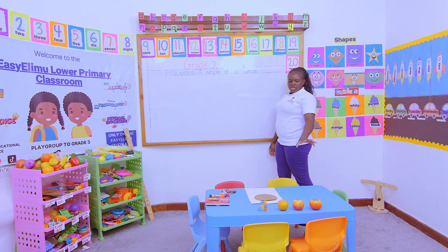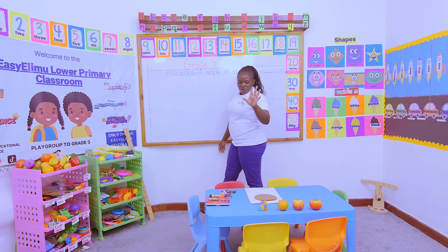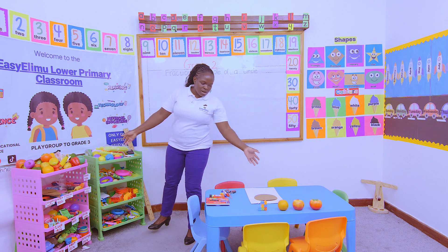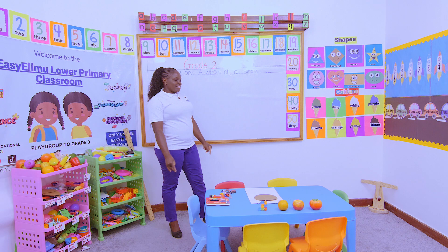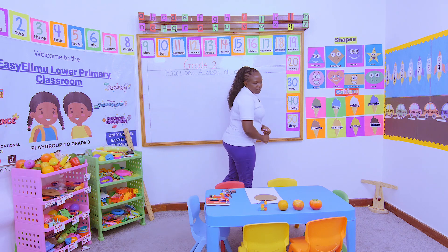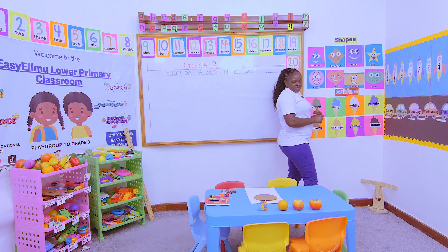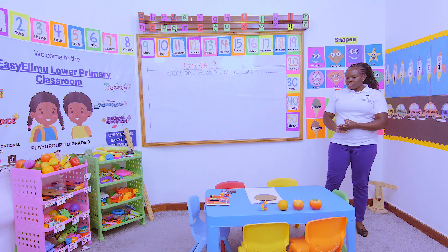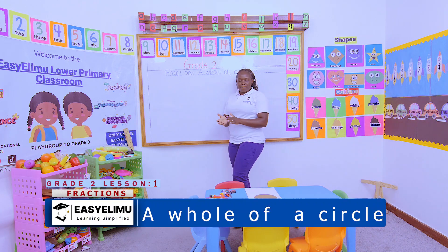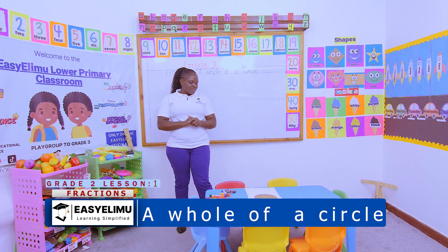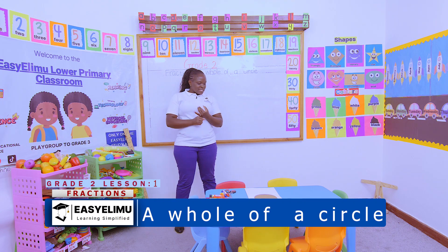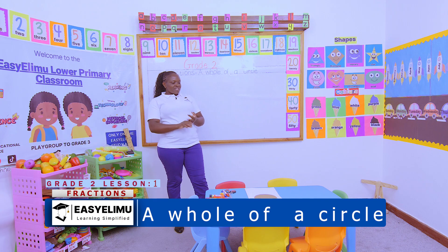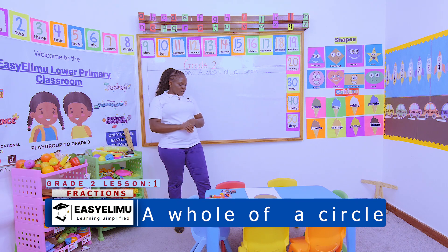Very good. Now, when you look at those four things, which ones are full? Which ones are whole — they don't miss anything? Teacher, the tomato is full, the apple is full, the orange is full. But the puzzle is missing some parts. Very good. You have realized that the puzzle is missing some parts. The orange is full, the apple is full, and the tomato is full.